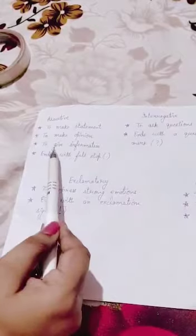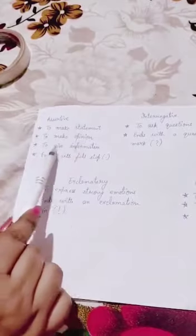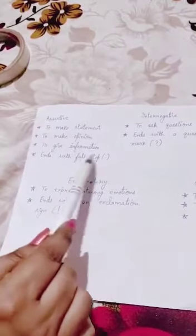Now, let's take the overview of all the kinds of sentences. Assertive sentences are used to make statements, to make opinions, to give information, ends with full stop.